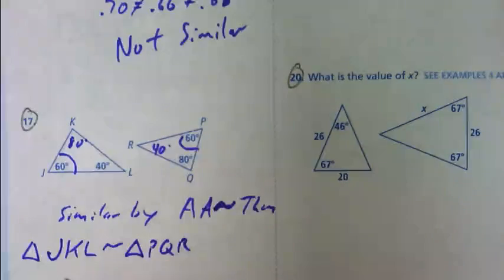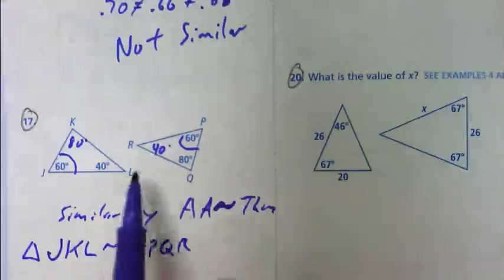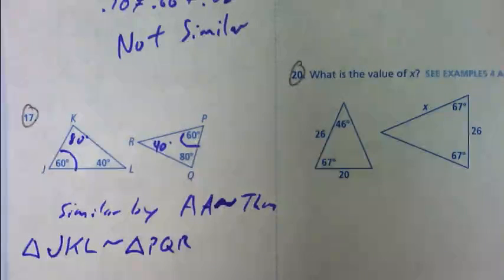Why that order? Yeah, because that's the order that the angles are congruent. So, J was 60, P was 60, K was 80, Q was 80, L was 40, R was 40. Again, they're in that corresponding order.